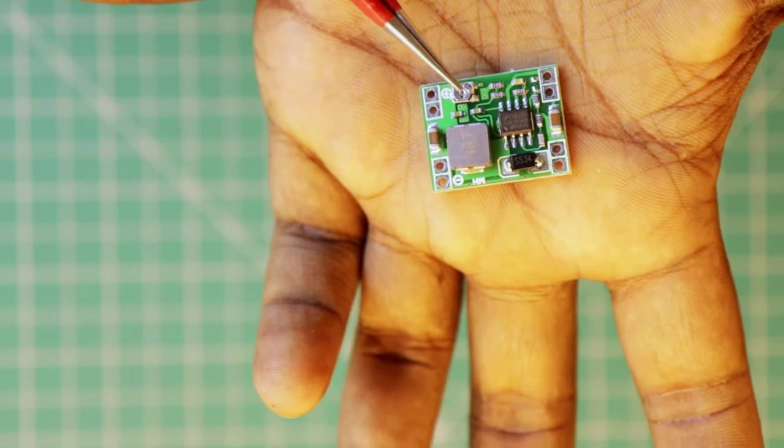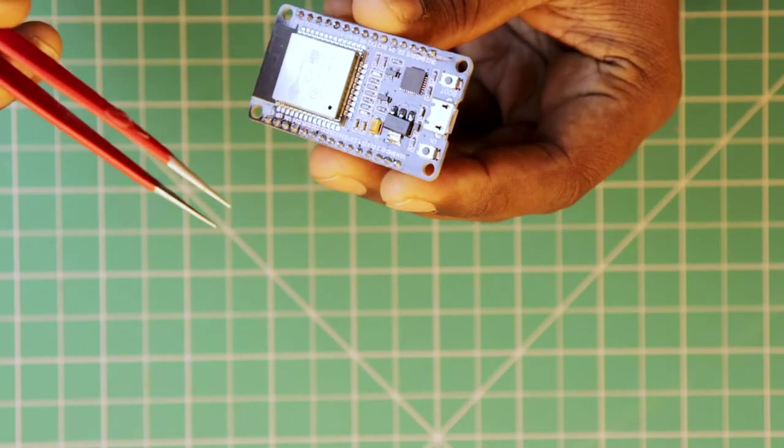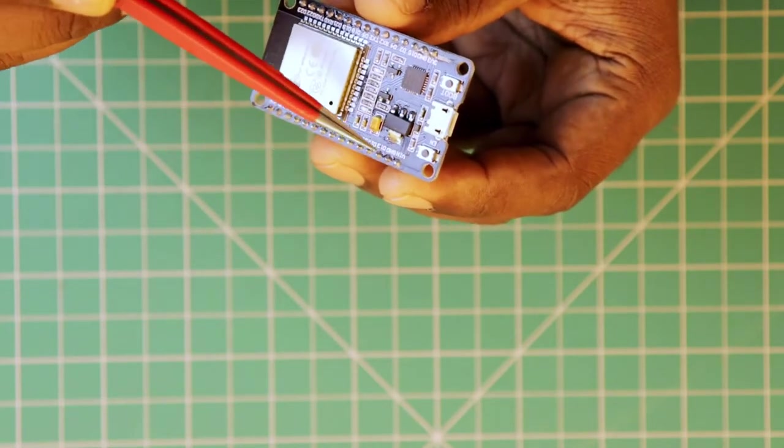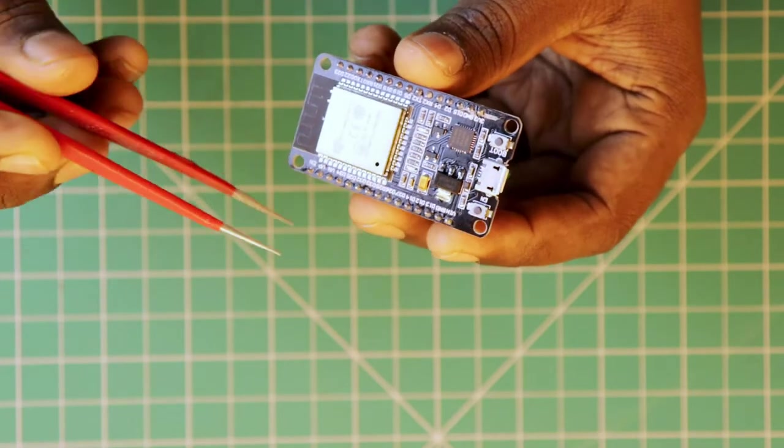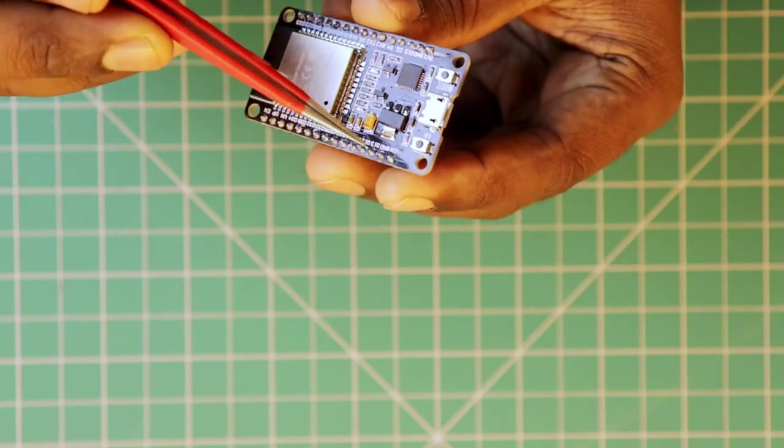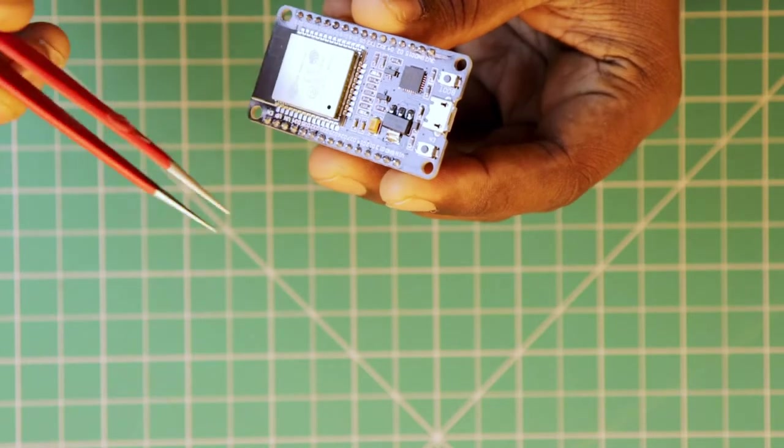I will set the output voltage to 5V using the preset available on this module. This 5V output can be connected to the VIN pin of the ESP32 board. The 5V can be reduced to 3.3V using the onboard LDO. We could have adjusted the step down converter to 3.3V and connected to the 3.3V line directly, but we can take the advantage of the onboard protection circuits if we connect it to the VIN pin.